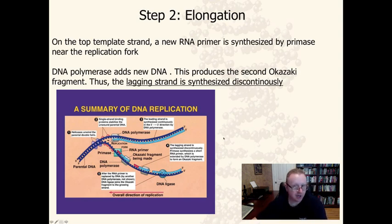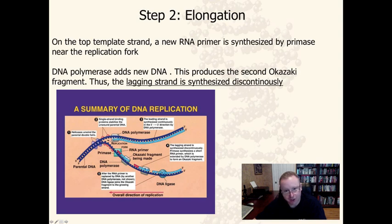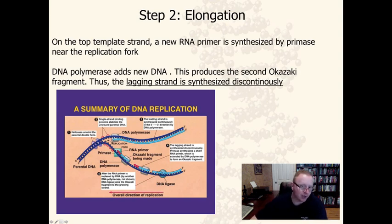Looking at the summary diagram, on the lagging strand we move away from the replication fork. As the replication fork opens further, a new primer is laid in and replication continues. Each time the fork opens even further, another new primer must be added and replication continues in that direction.